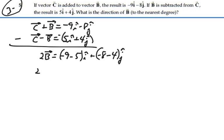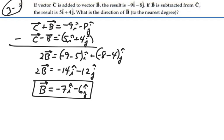So 2B equals -14i - 12j. If we divide both sides by two, vector B equals -7i - 6j. That's our vector B.